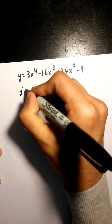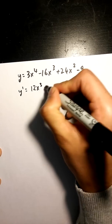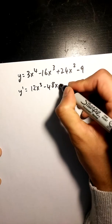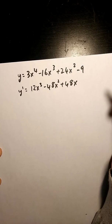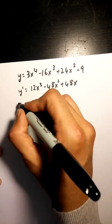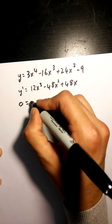Okay, so again the first thing we need to do is derive this equation. Once we derive it, we gotta make it equal to zero and we need to factor it as well.